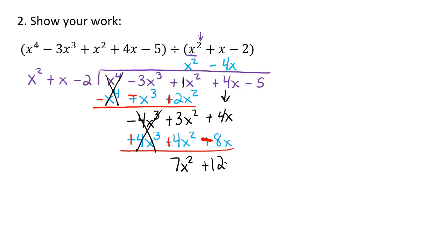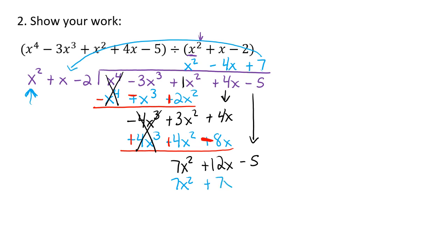Then we're going to have 3x squared plus 4x squared, that's going to give me 7x squared. 4x plus 8x is 12x. I'm going to take my last number and drop it down. And I'm going to go through that process one more time. I'm going to ask myself what number times x squared is going to get me 7x squared — that would be 7. 7 times x squared is 7x squared. Then 7 times x is 7x, and 7 times negative 2 is negative 14. I'm going to switch my signs. And my 7x squared minus 7x squared cancels out. 12x take away 7x is 5x. Negative 5 plus 14 is positive 9. Now I can't continue any further because I ran out of space up here.